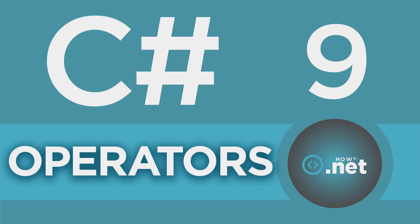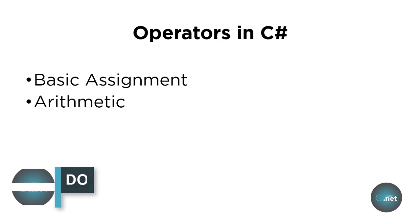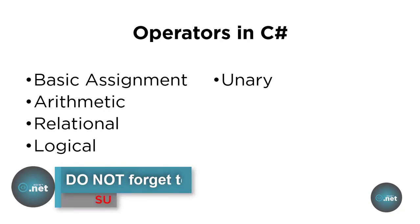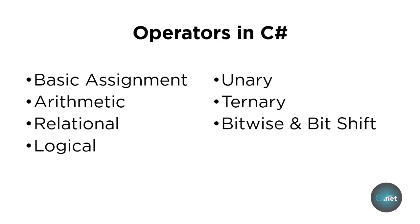Hi and welcome to this part. We will learn everything about different types of operators in C-sharp programming language and how to use them. C-sharp comes with different types of operators: basic assignment operator, arithmetic operators, relational operators, logical operators, unary operators, ternary, bitwise and bitshift, and the last one is the compound assignment operators.